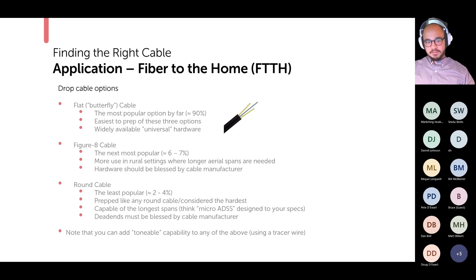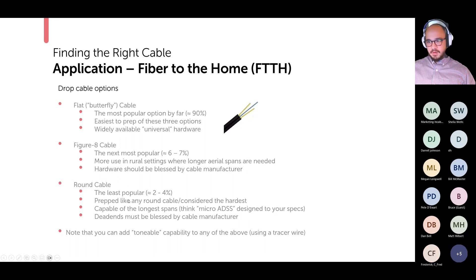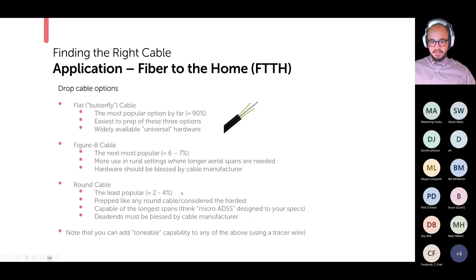Figure eight drop cables are the next most popular, used mostly in rural settings where you need longer aerial spans between poles. Hardware recommendations should come from or be blessed by your cable manufacturer. Round drop cables are the least popular option, but they're prepped the same as any other round cable and are capable of the longest spans — you can think of them as micro ADSS — and can be designed to whatever span length you need. Dead ends have to be approved by your cable manufacturer. With any of these cables, you can add tonability using a tracer wire.